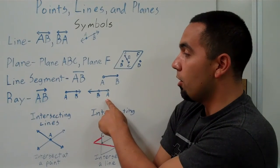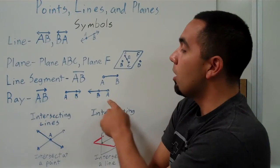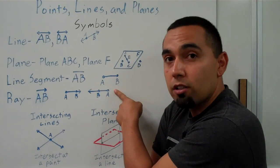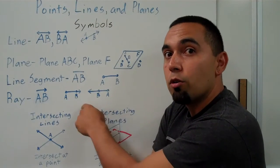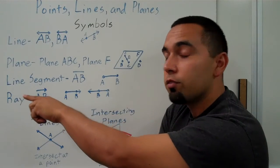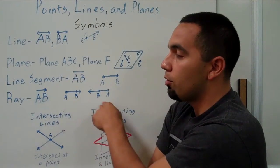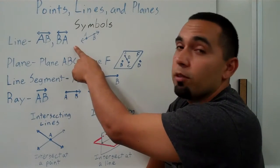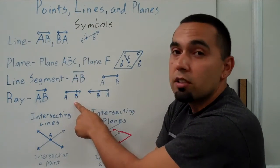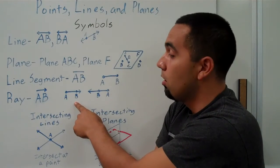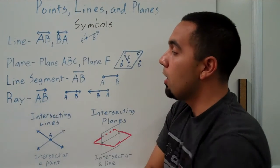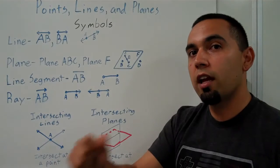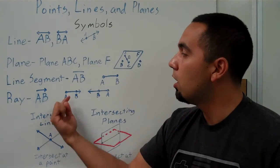This ray right here we would also call ray AB because, again, the ray starts here at A and goes in the direction of B and keeps going on and on forever. We wouldn't want to call either of these rays BA. So in that case, it's different from the line. But you can see why it's different from the line. So, again, ray AB. Always start at the endpoint and then go in the direction of the ray.